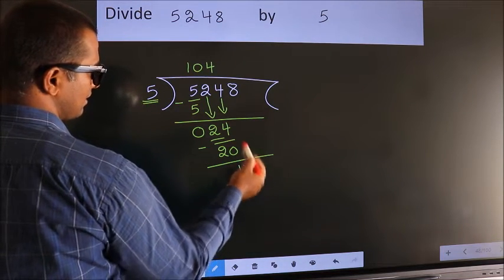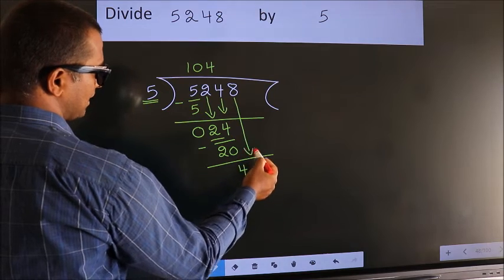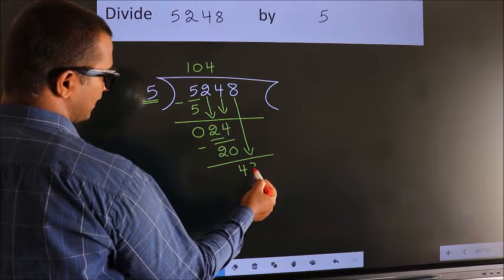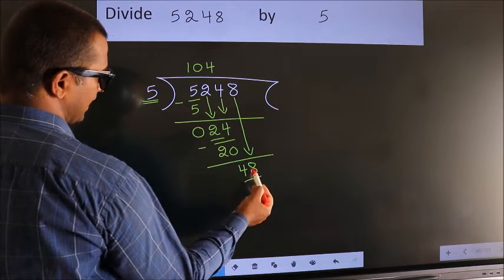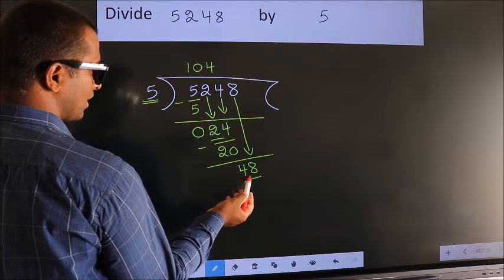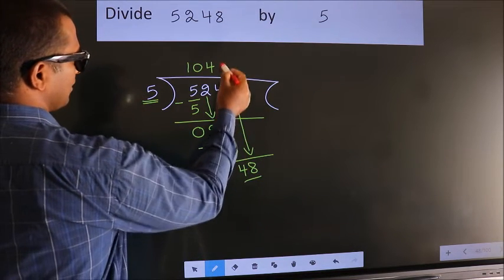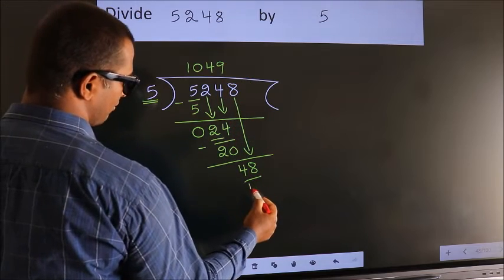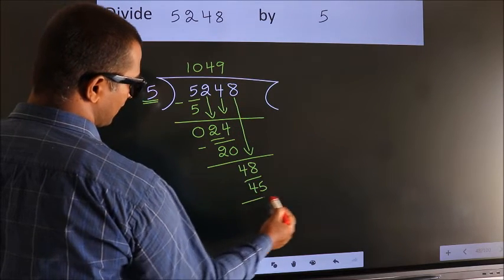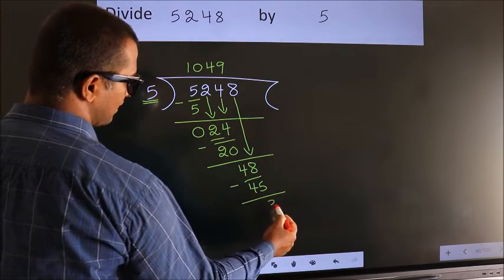After this, bring down the next number. So 8 down. So 48. A number close to 48 in the 5 table is 5 times 9 equals 45. Now we subtract. We get 3.